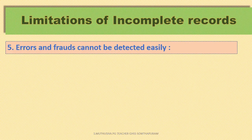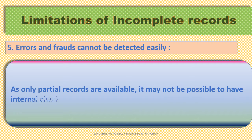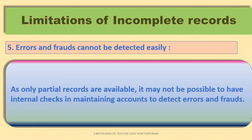Fifth limitation — Errors and frauds cannot be detected easily. As only partial records are available, it may not be possible to have internal checks in maintaining accounts to detect errors and frauds.